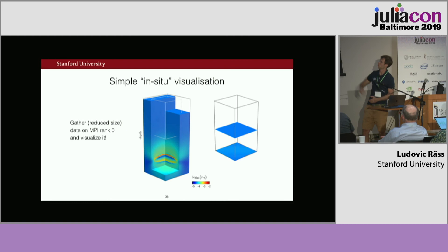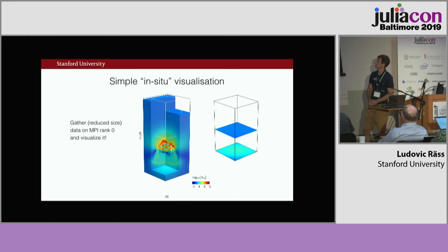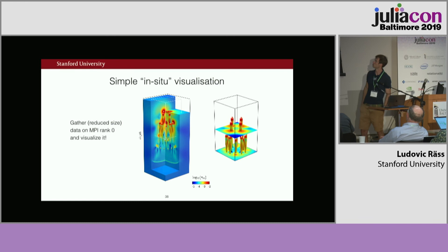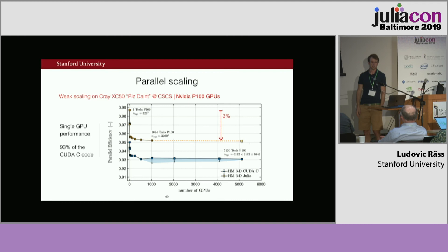It works. We gather data every few iterations on MPI rank zero and visualize it while running. We tested this at low resolution — 127×127×250 grid points — and get a nice distribution of high-permeability channels propagating from a random perturbation. Regarding performance: the single-GPU Julia code versus the C CUDA code runs at 93% of the C performance, so pretty close to the same.